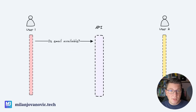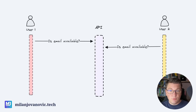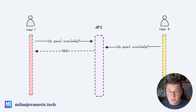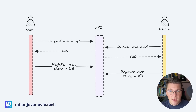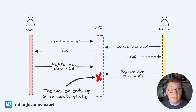We have two users that are interacting with our API. The first user reaches out to the API and checks if this email is available. Then we have the second user reaching out to the API using the same email address. Our API is going to check the database, figure out that this email isn't currently in use, and reply yes to both users. In the meantime, the first user registers, and then the second user attempts to do the same. If we don't have any other checks in place, this succeeds and we end up with our system in an invalid state.